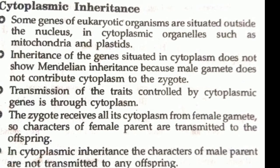The transmission of traits controlled by cytoplasmic genes occurs through the cytoplasm, and the zygote receives all its cytoplasm from the female gamete. Therefore, the characters of the female parent are transmitted to the offspring, while the characters of the male parent are not transmitted to the offspring.